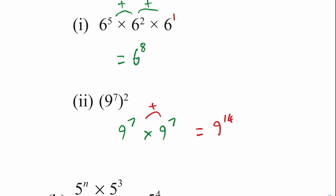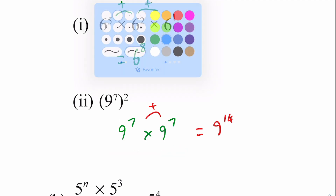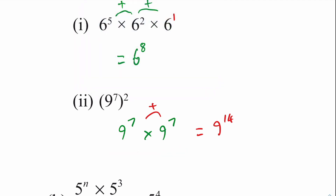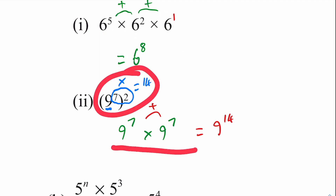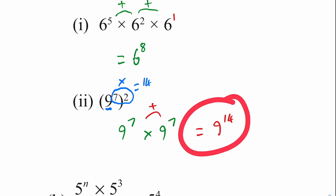There is a shortcut to getting this answer without having to write it out like that. Whatever the power is inside the bracket, we multiply it by the outside power — so if it were cubed we'd multiply by 3, or to the power of four we'd multiply by 4. In this case we just multiply 7 by 2 to get 14, and the base of course stays the same. You can do it either way and you'll get 9 to the power of 14 both times.